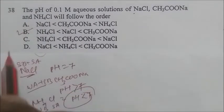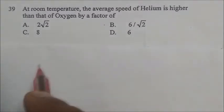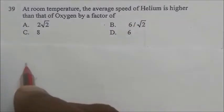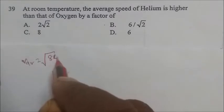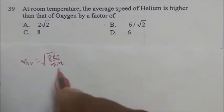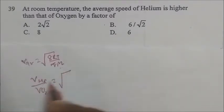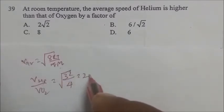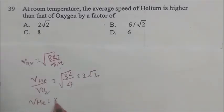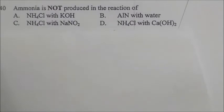At room temperature, the average speed of helium is higher than that of oxygen by what factor? The average speed formula is v = √(8RT/πm). The ratio v(He)/v(O2) = √(M_O2/M_He) = √(32/4) = √8 = 2√2. So the velocity of helium is 2√2 times that of O2. The correct answer is confirmed.